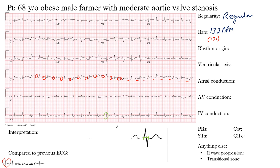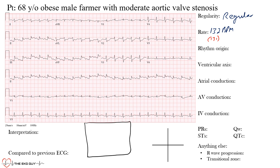We have P waves preceding QRS complexes, meaning we have some sort of atrial rhythm — either from the sinus node or an ectopic atrial focus. So now we must ask: is sinus rhythm present? This is very important and often taken for granted. The goal is for you to understand why you see what you see on the EKG.